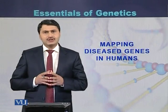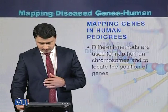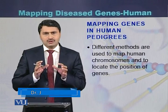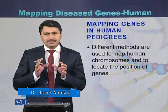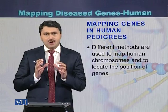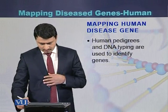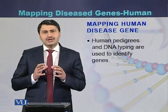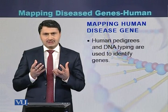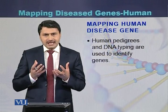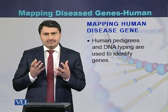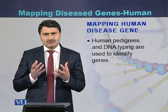Mapping disease genes in humans. Different methods are used to map chromosomes, locate genes, or identify where a gene is present on a chromosome. Mapping human disease genes is usually done by selecting certain families, identifying those families, and typing the DNA of the individuals of that family. This is the common method for identification of disease genes in humans.